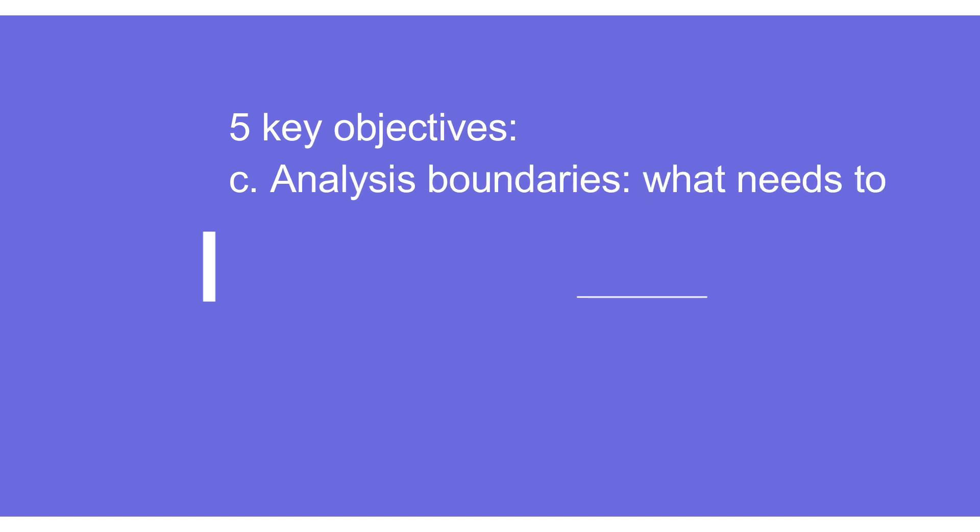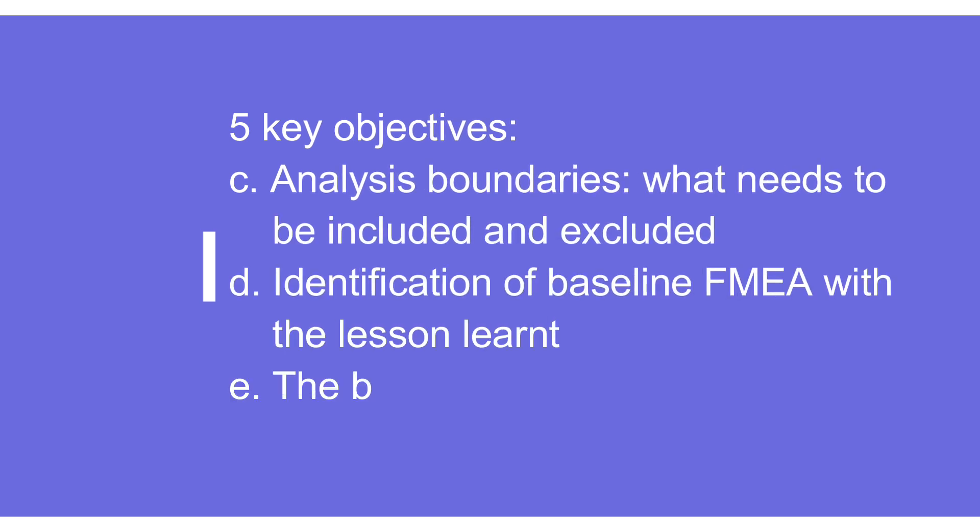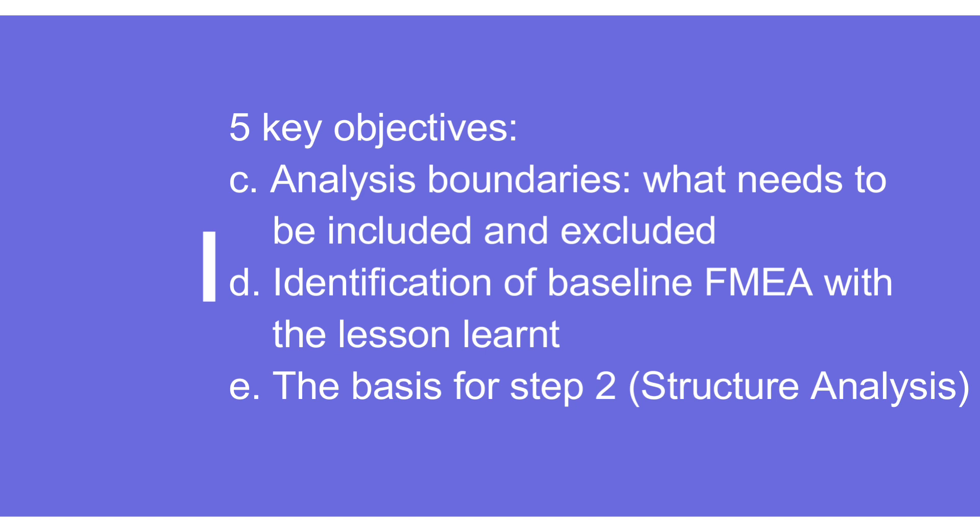Point three is about what needs to be included and what needs to be excluded from the FMEA. We should be very clear before going ahead. Before making FMEA, there may be lessons learned from previous FMEAs, or there may be a generic FMEA or boundary FMEA that provides basic knowledge, so that when we make this particular FMEA things are clearer and more effective.